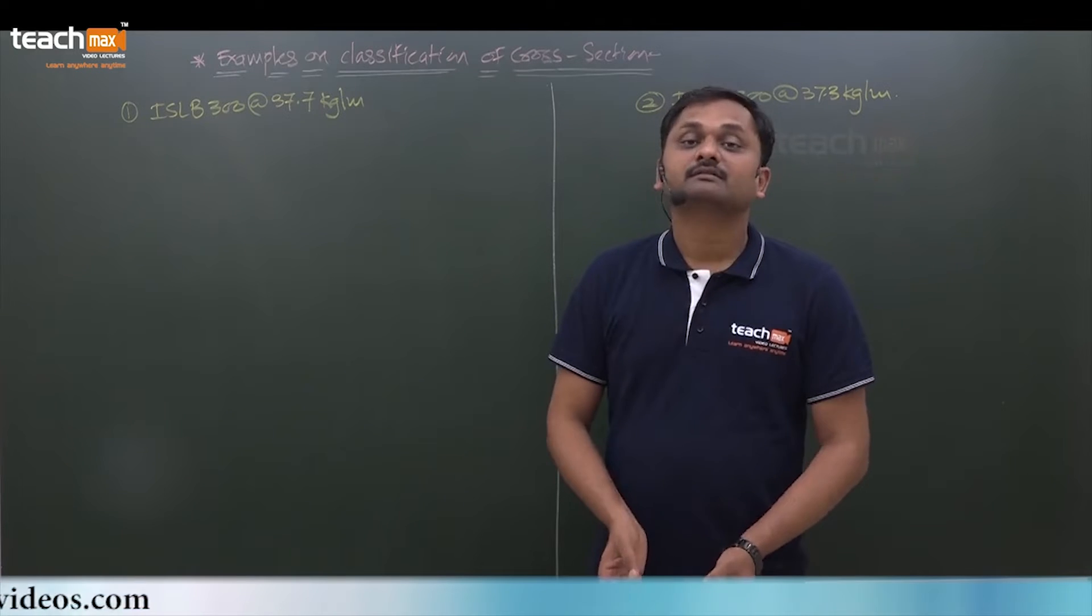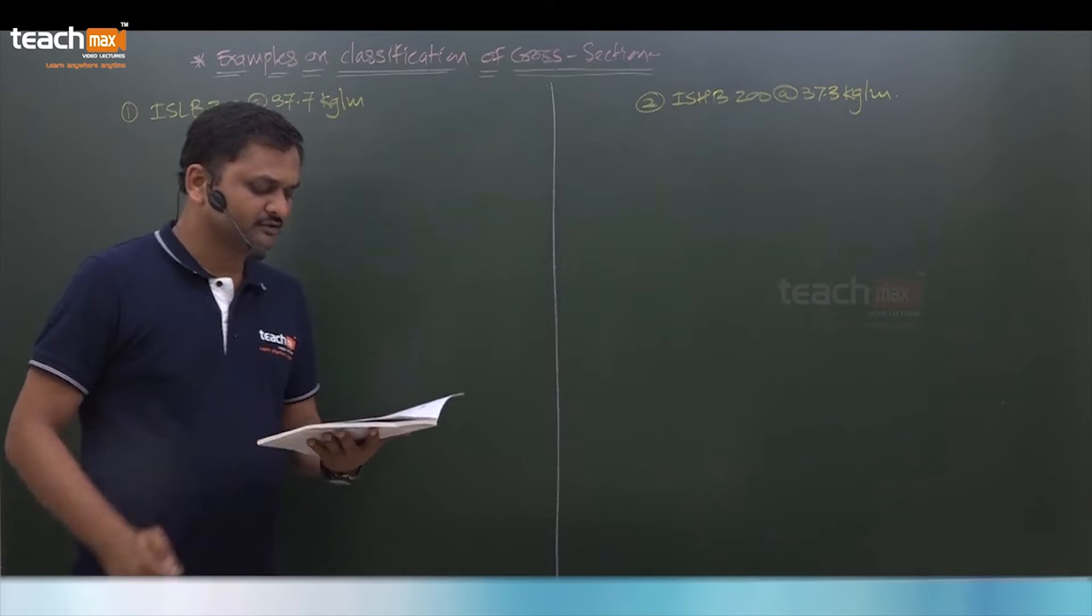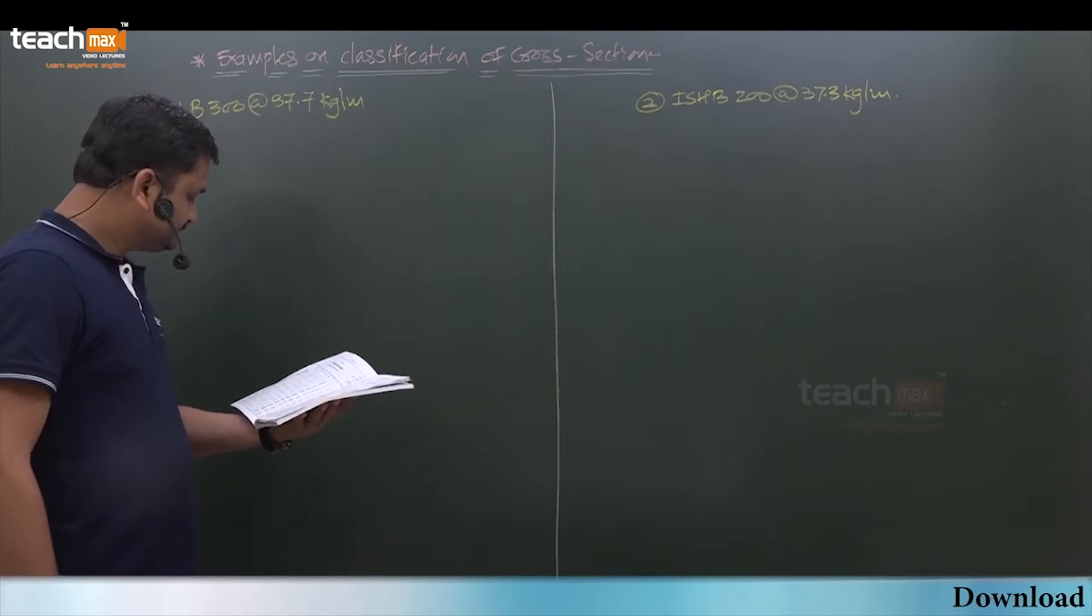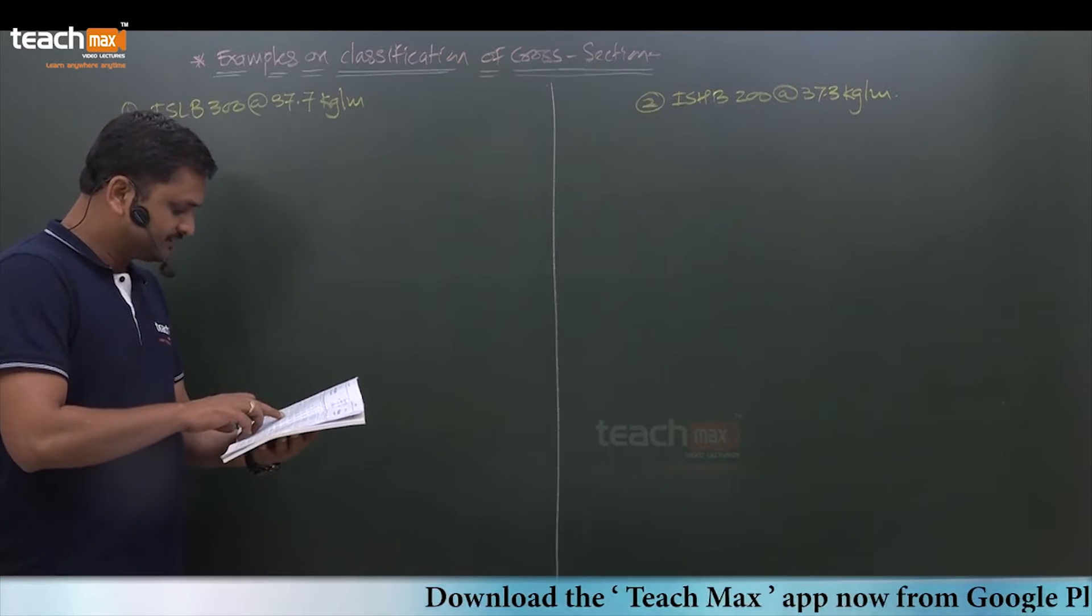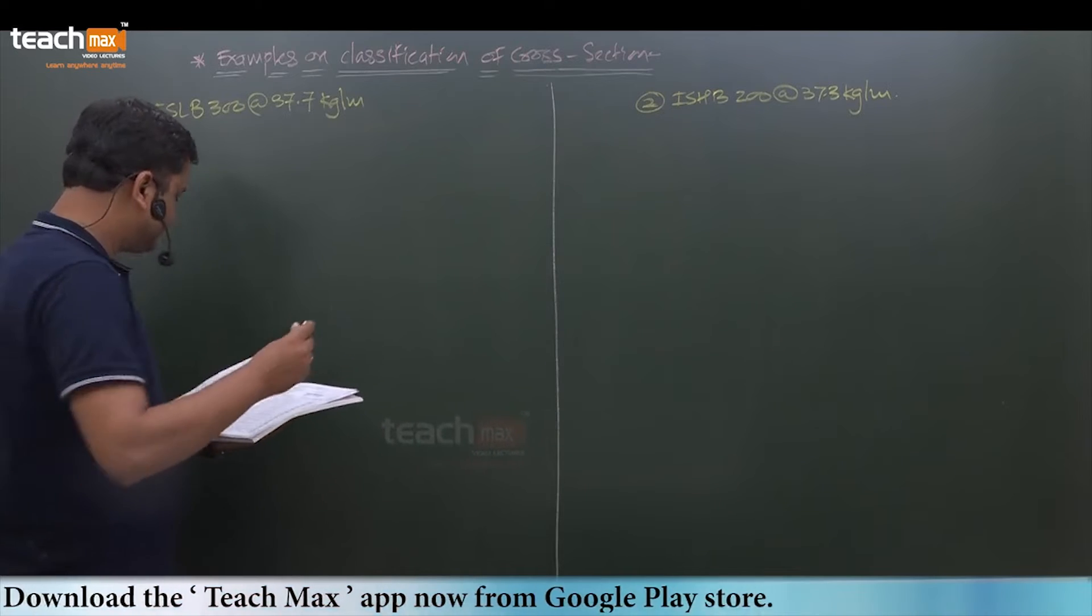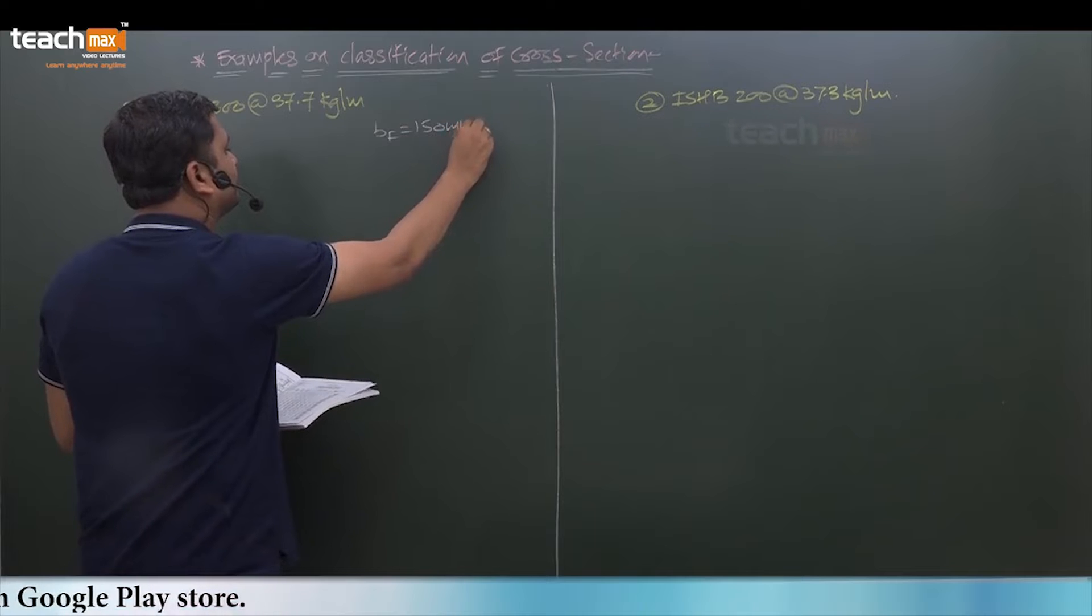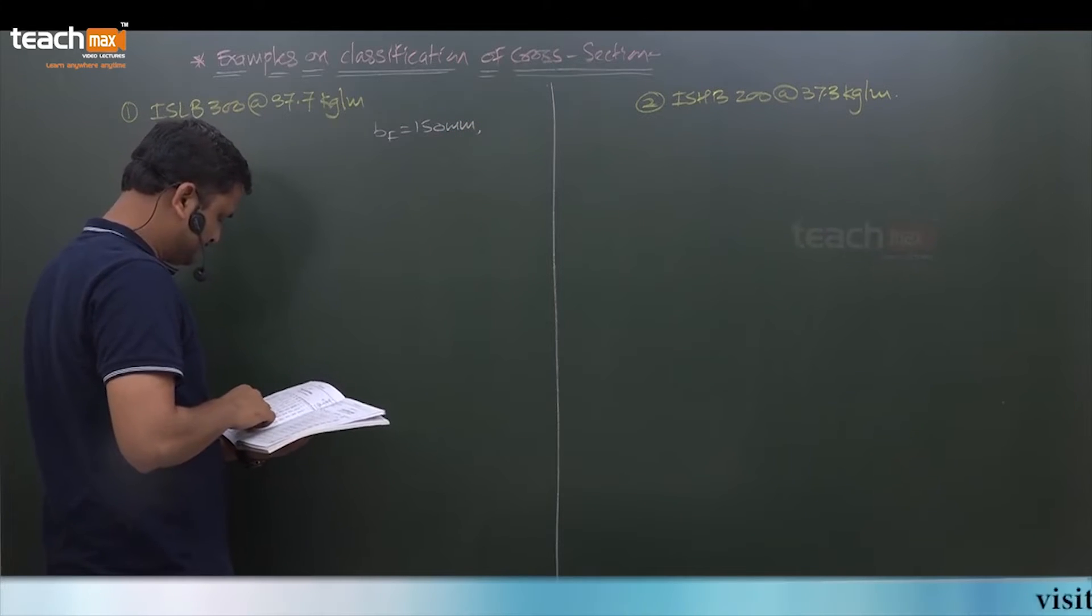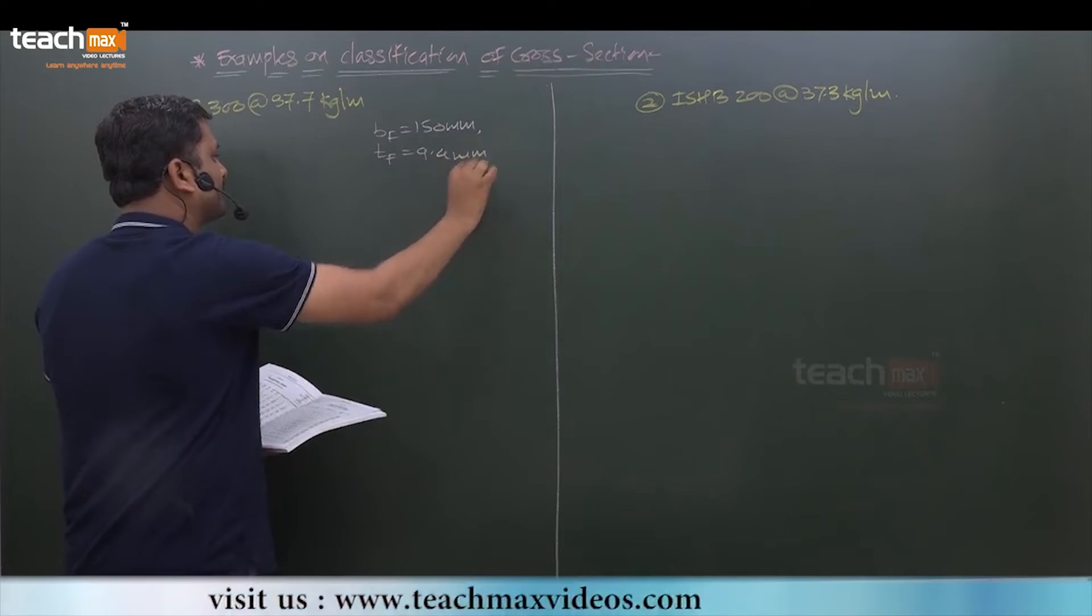Let us write down the properties from steel table or you can refer IS handbook 808. I am using steel table of Ramamrutham. For ISLB 300 of 37.7 kg per meter, its width of flange is 150 mm. I am writing dimensions here, we require 150 mm width of flange. Thickness of flange is also required, 9.4 mm.